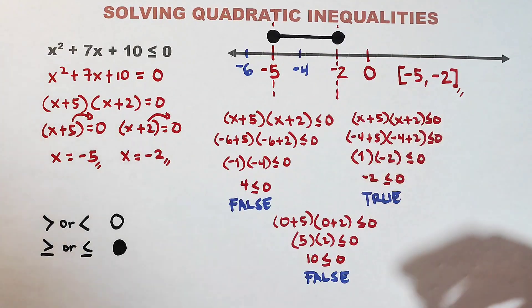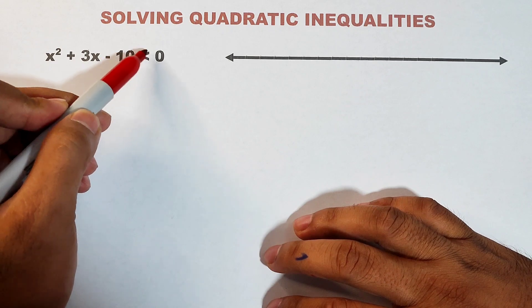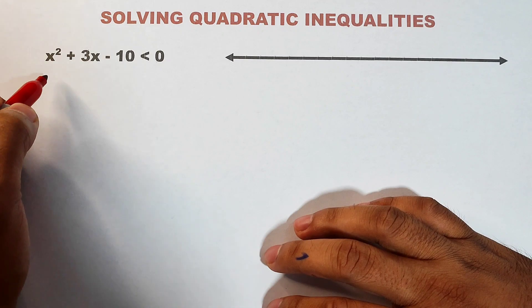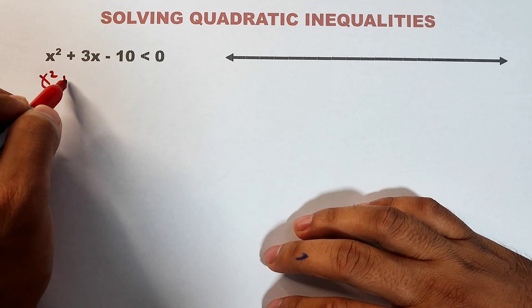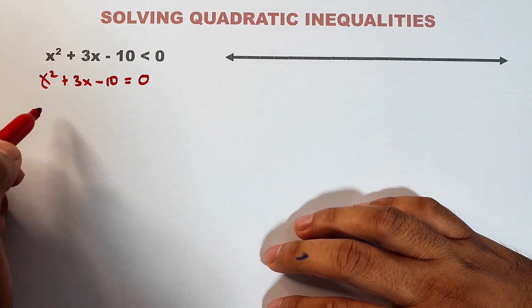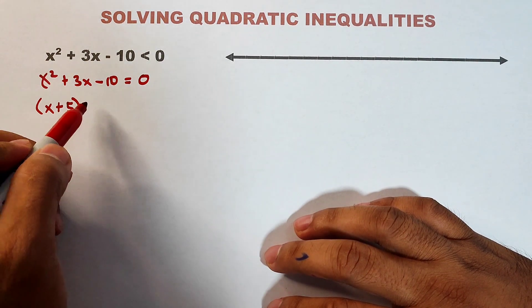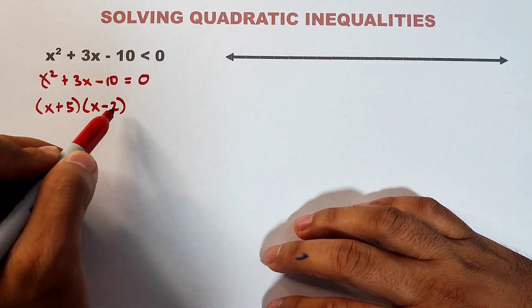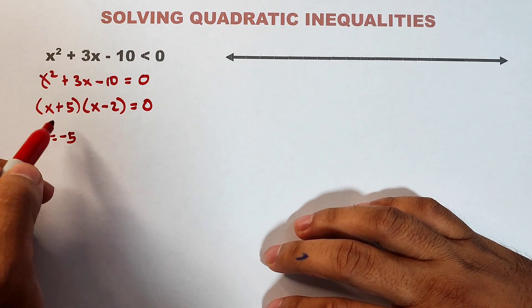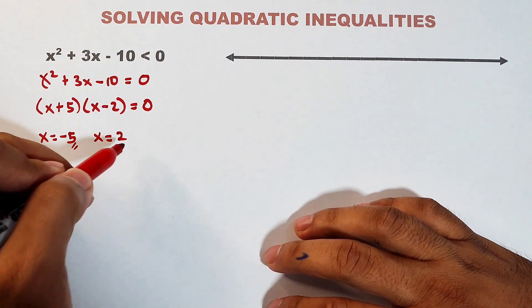Now let's move on to example number two: x squared + 3x - 10 < 0. Since the symbol is strictly less than, the critical values are automatically not included. We convert to an equation: x² + 3x - 10 = 0. Factoring gives (x + 5)(x - 2) = 0, so the critical values are x = -5 and x = 2.